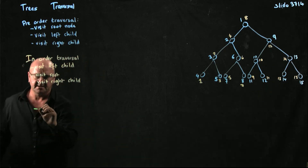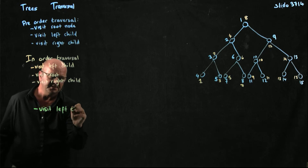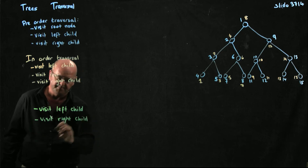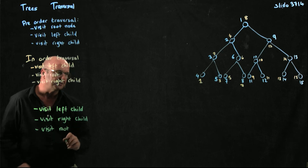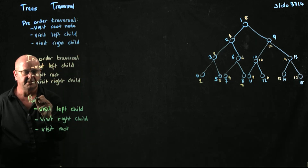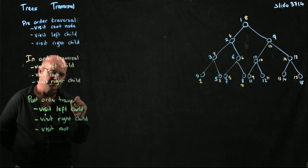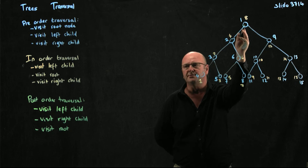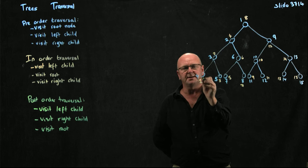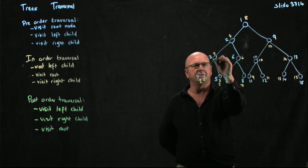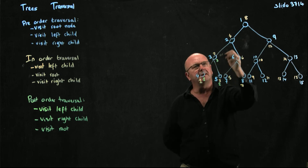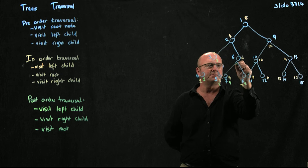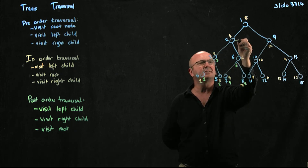Instead of left-root-right, I can visit the left child, the right child, and then the root — this is called post-order traversal. I start at the root, go to the left child, go to the left child again, come down to the leftmost node: left child, right child, root — that's numbered there. I go back up; I still haven't done the right child, so I come down: left child, right child, root. Now I've done all subtrees on that side and visit that node.